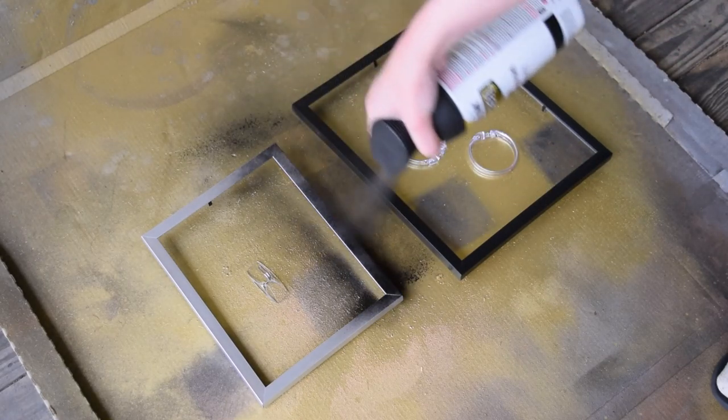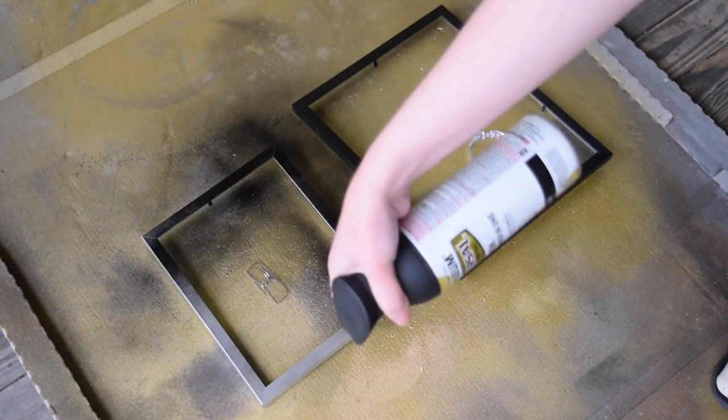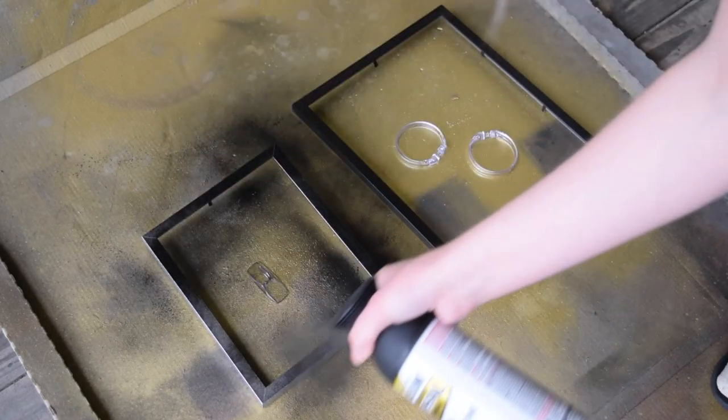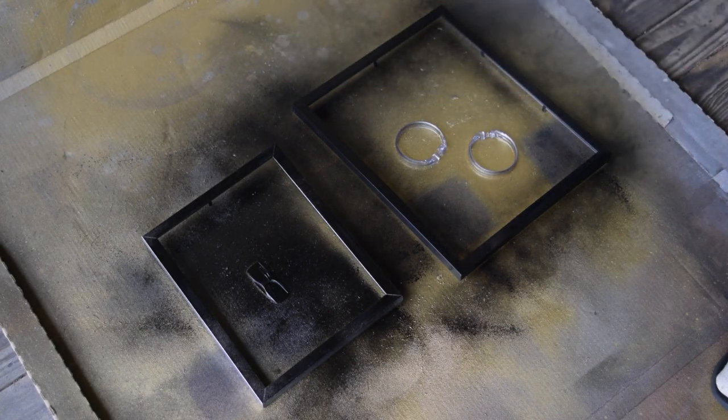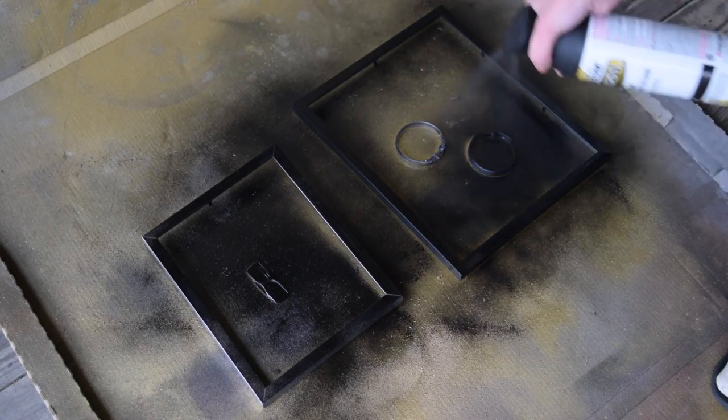I started this project by taking all of those little pieces outside and giving them two coats of black spray paint. I chose the satin black because that's what I had in my stash. You could of course use a glossy spray paint, a matte spray paint, whatever kind of finish you like.